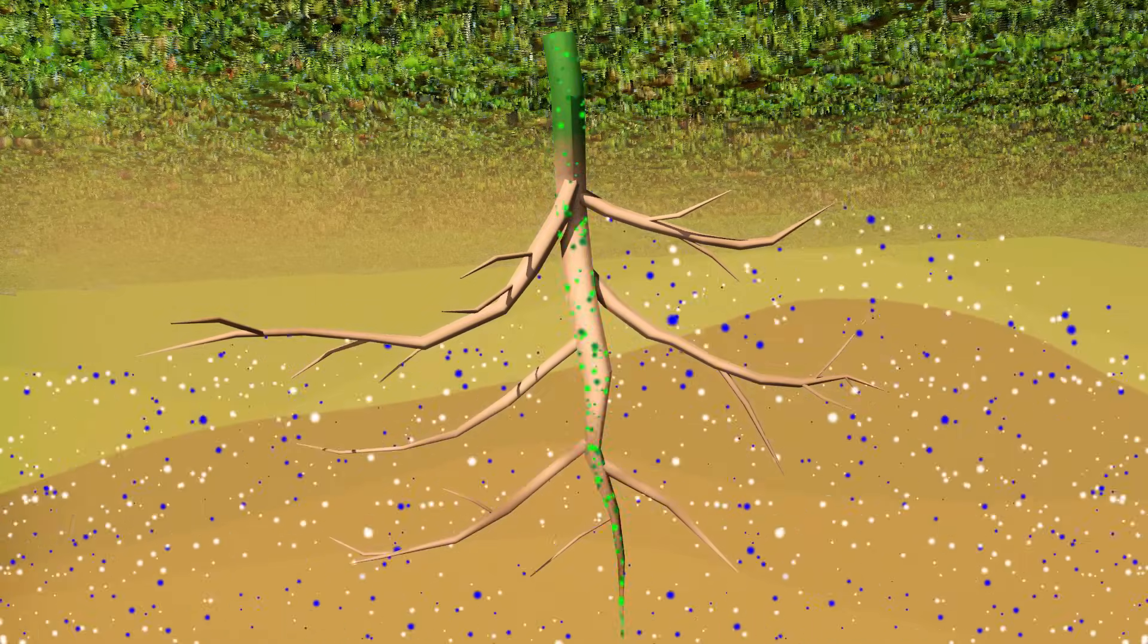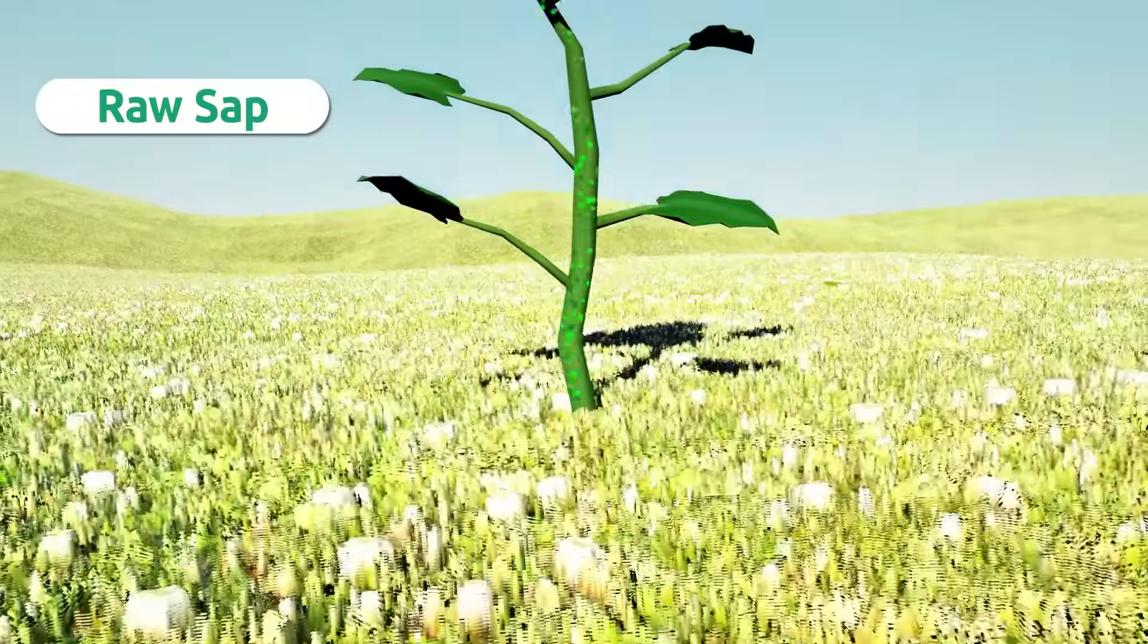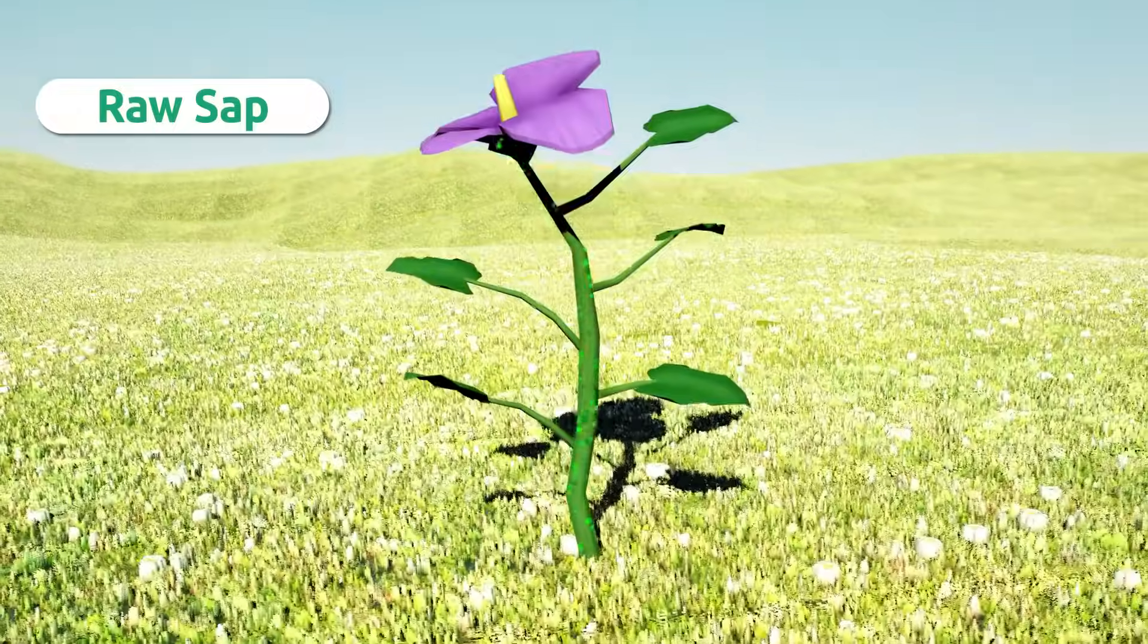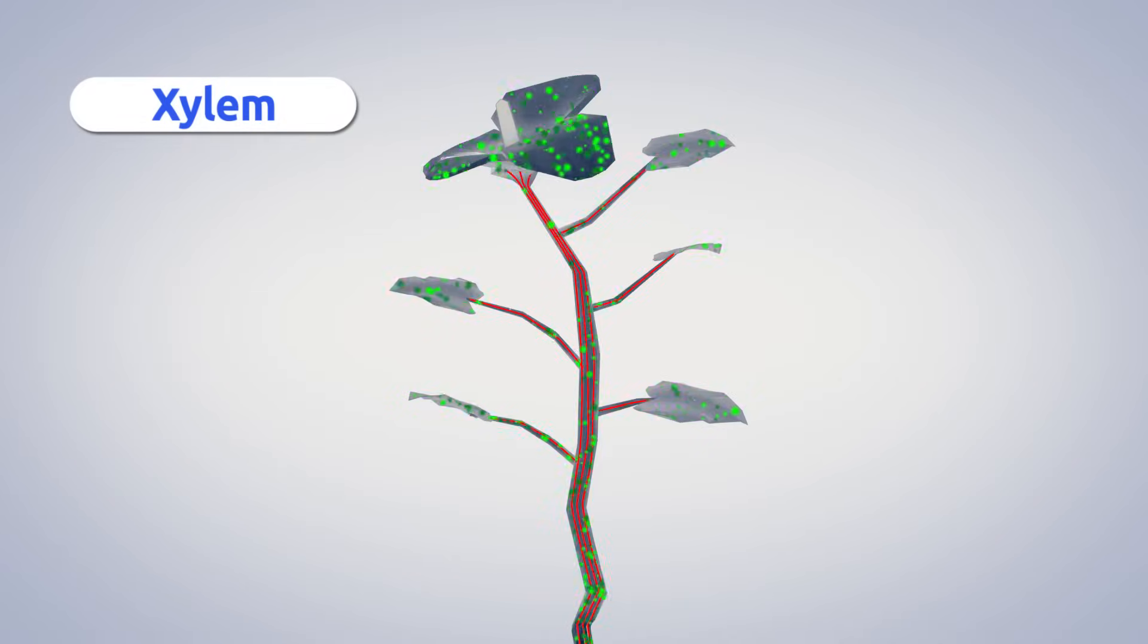This fluid mixture is called raw sap. Raw sap flows up the roots to the stem and travels through the rest of the plant to the leaves with the help of woody transport tissues called xylem.